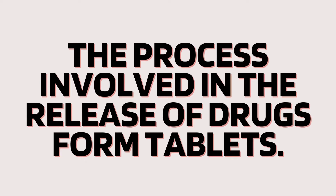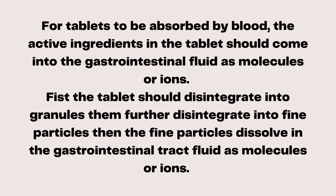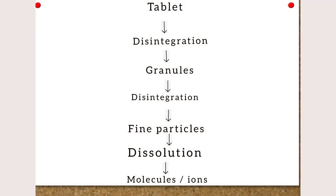For tablets to be absorbed by blood, the active ingredients in the tablet should come into the gastrointestinal fluid as molecules or ions. First, the tablet should disintegrate into granules, then further disintegrate into fine particles, and then the fine particles dissolve in the gastrointestinal tract fluid as molecules or ions.